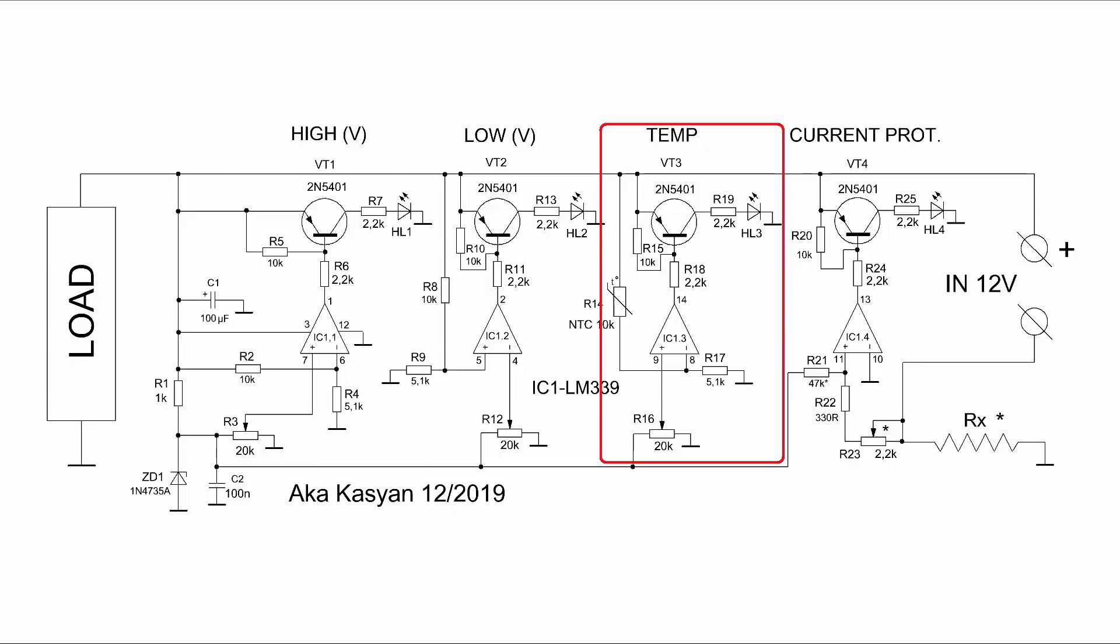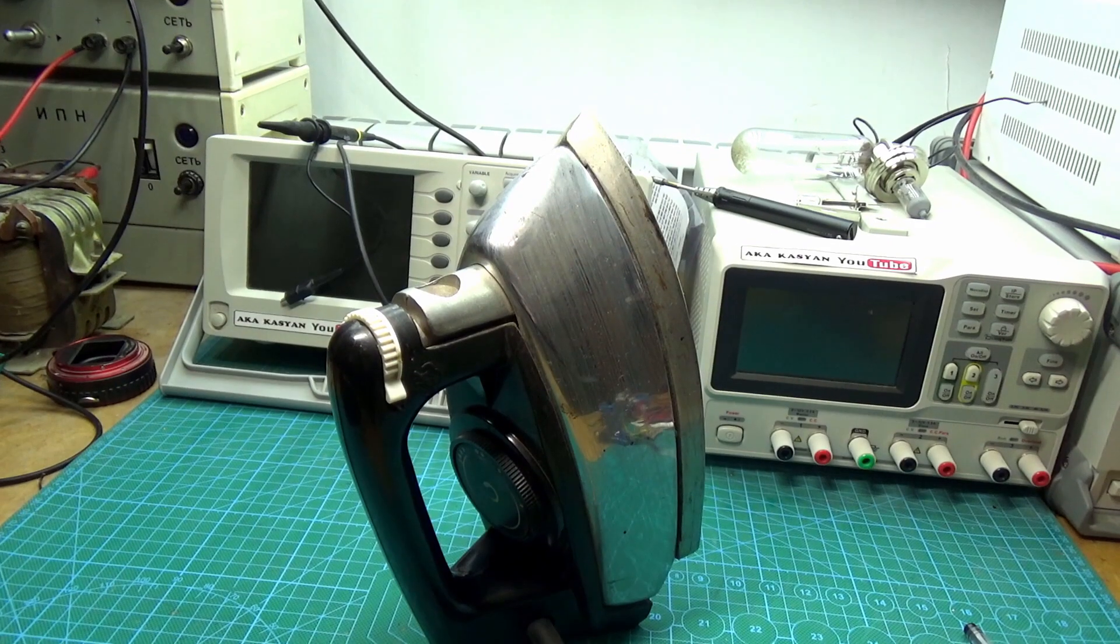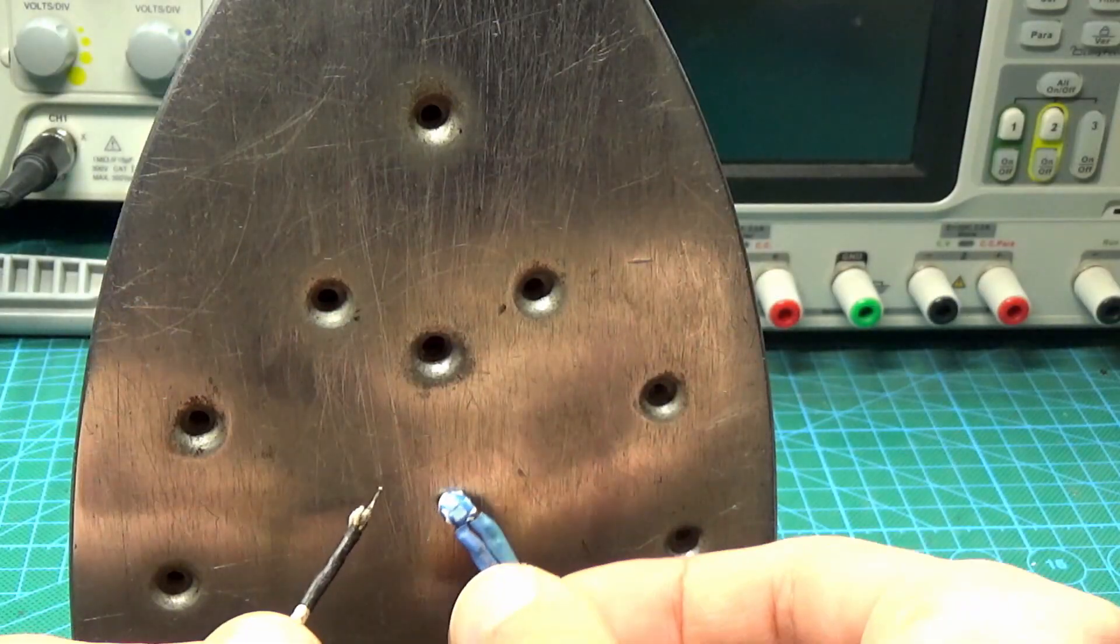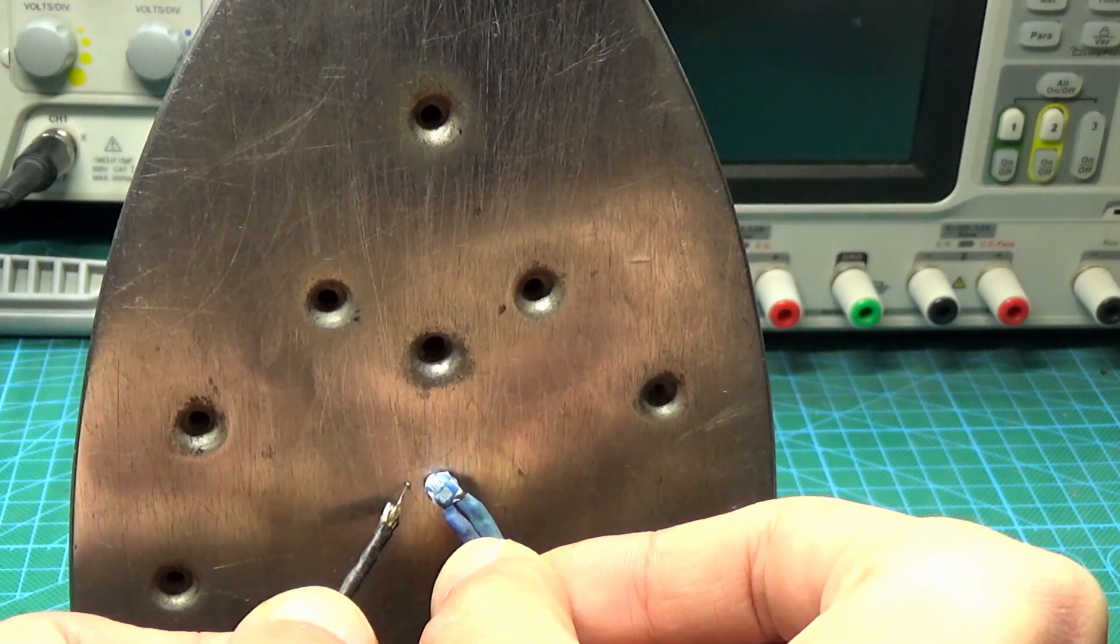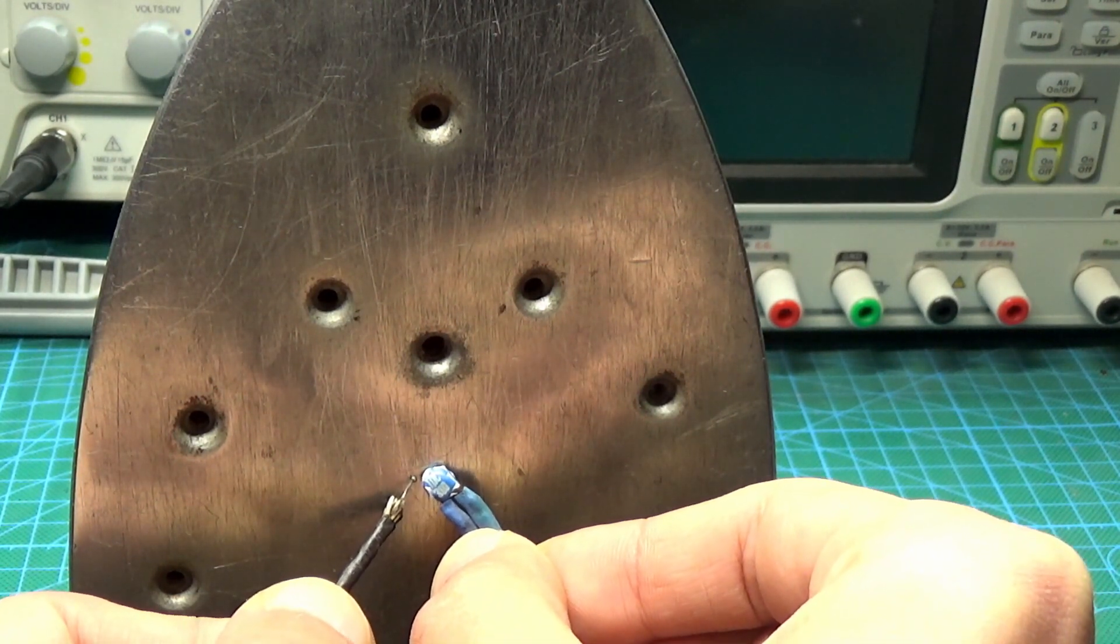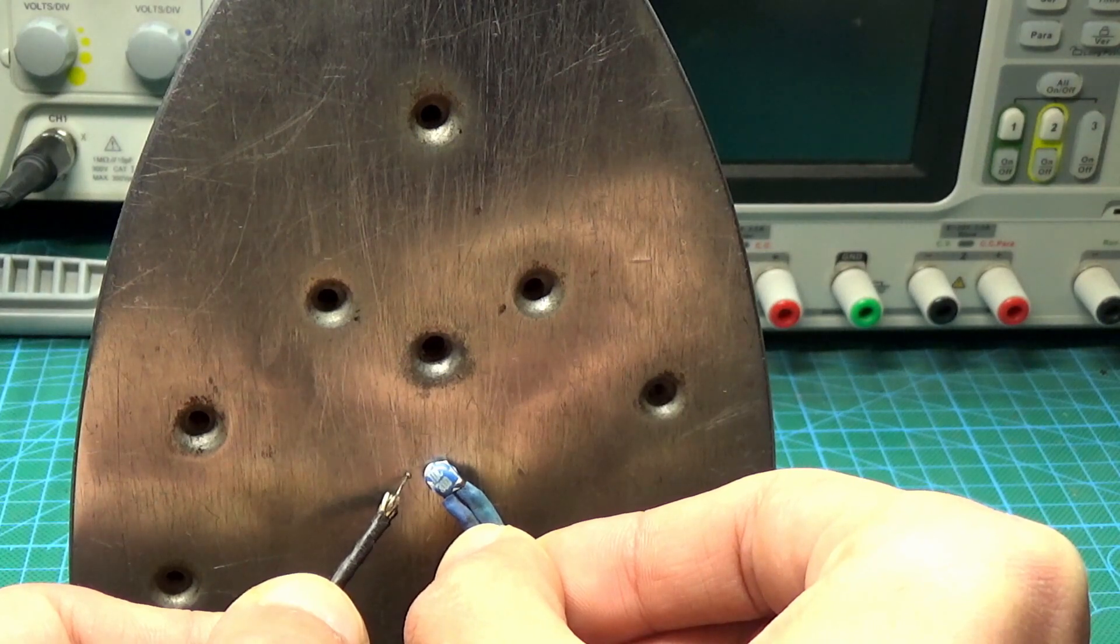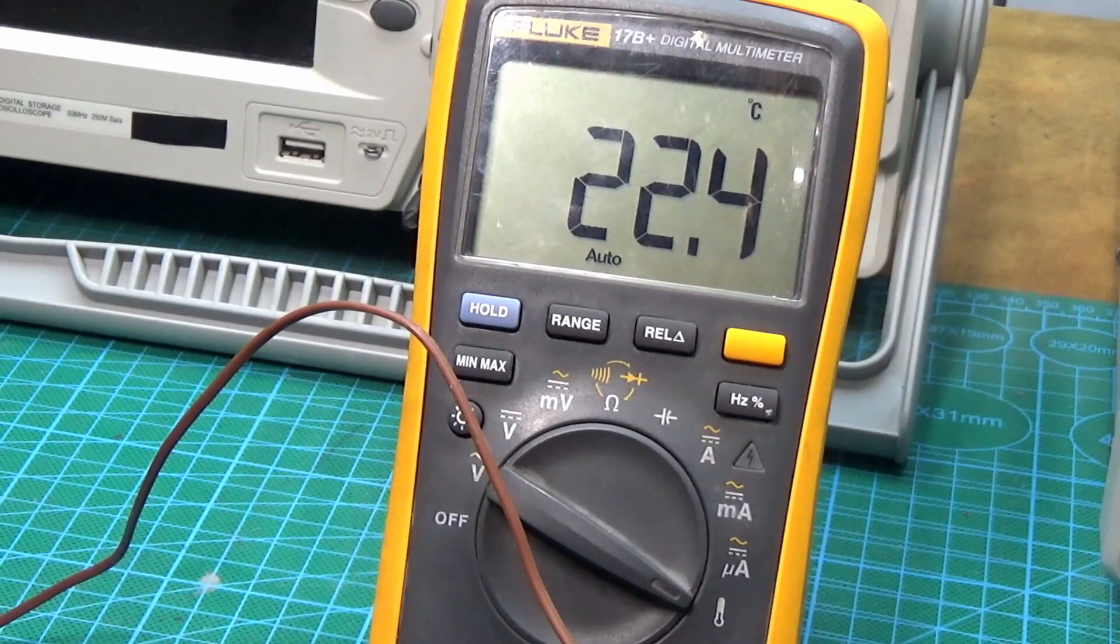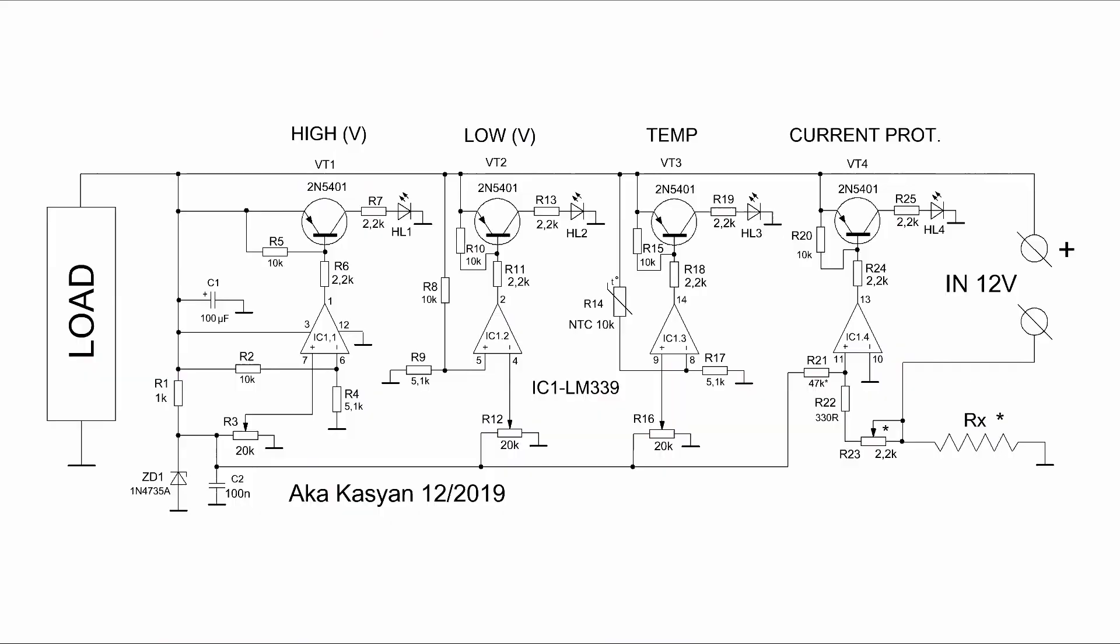To do this, you need any heat source with the ability to adjust the temperature, for example an iron. The thermocouple of the reference thermometer and the thermistor of the device are placed on a heated surface. Warm up to the temperature at which the protection should work. The temperature is monitored by a thermometer. Then we are rotating the tuning resistor until the LED lights up.